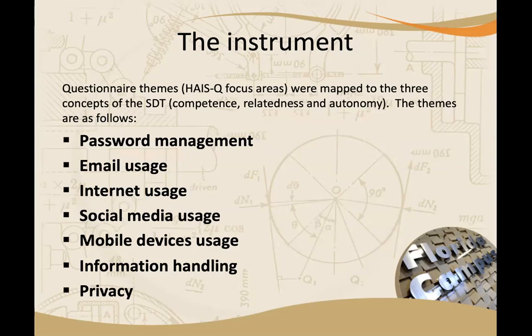The development of the instrument involved combining themes from the HAIS-Q focus areas, mapped to the three concepts of competence, relatedness, and autonomy. The HAIS-Q has six focus areas; we added one more — privacy — to come up with seven. For each of those focus areas there are also sub-themes. For example, under password management, sub-themes include password strength, how secure the password is, and password sharing.